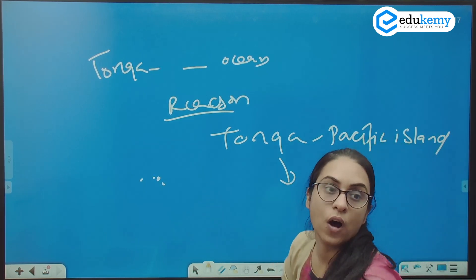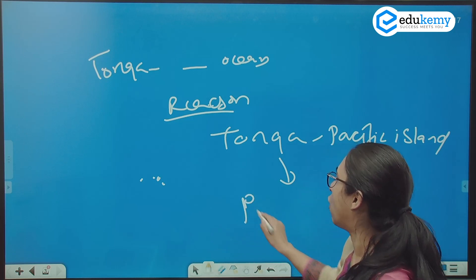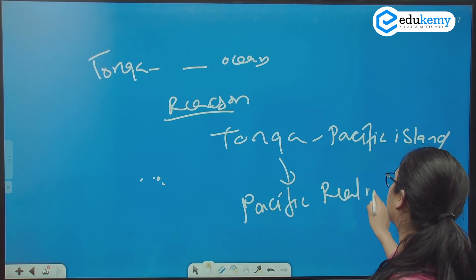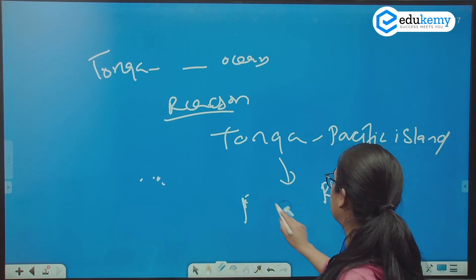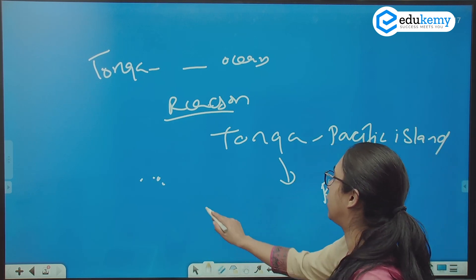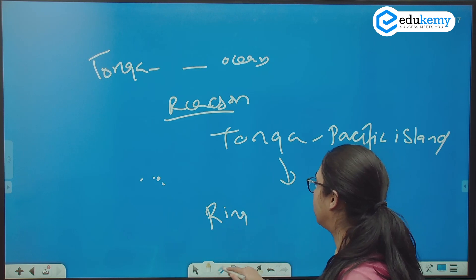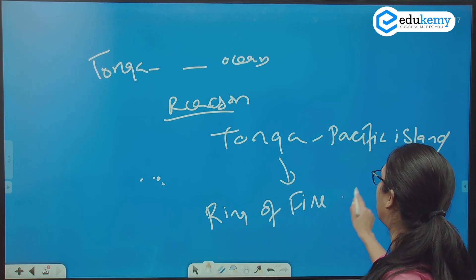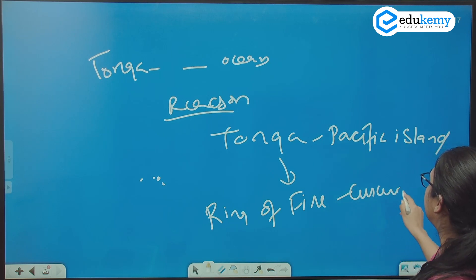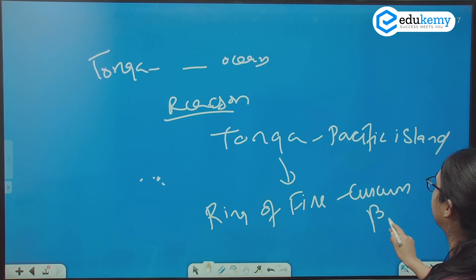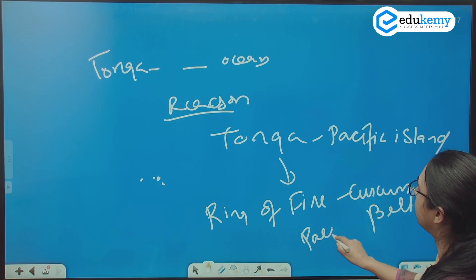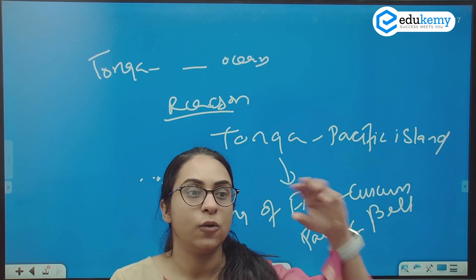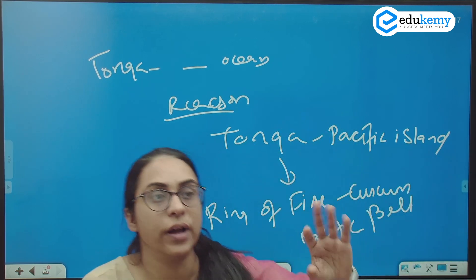The reason — you will see a term often in the newspaper which is known as the Pacific rim, or you can say the ring of fire. Ring of fire, or the circum-pacific belt. What is the circum-pacific belt? What is the ring of fire? We will see that.